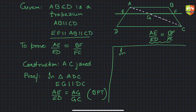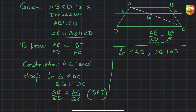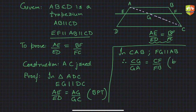Similarly, in triangle CAB, where AB is the base, FG is parallel to AB — as given. Therefore, by BPT again, we can say CG upon GA is equal to CF upon FB.